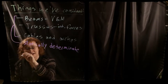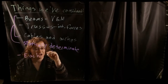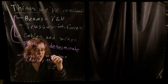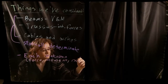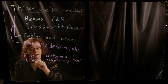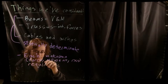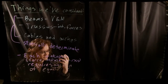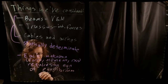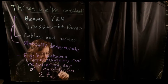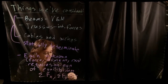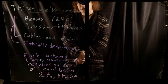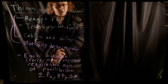Each unknown — and that unknown could be a force, moment, reaction, et cetera — requires one equation of equilibrium if we want to solve it using statics alone. By equilibrium, I'm referring to our summation of forces in the x direction, summation of forces in the y direction, summation of moments, et cetera. For a single rigid body, that means we can solve for up to three unknowns. For more complex bodies such as trusses, the number of unknowns we can solve for will vary based on truss geometry.